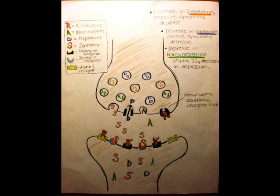When positive symptoms are present, dopamine levels are too high. Risperidone blocks the dopamine D2 receptor sites, and therefore lowers the levels of dopamine, and also reduces the positive symptoms of schizophrenia.